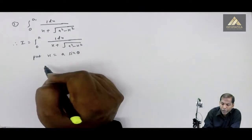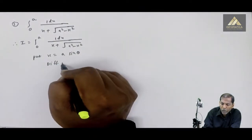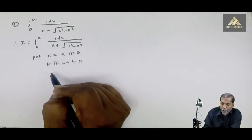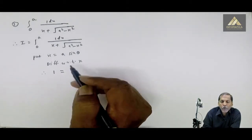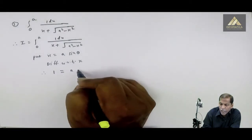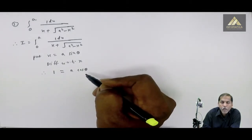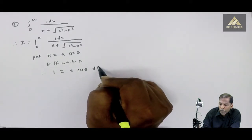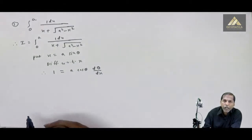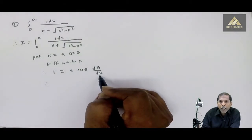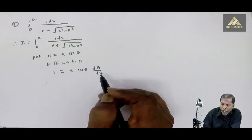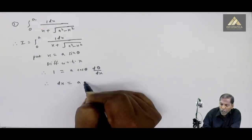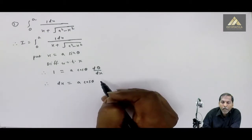After putting x equal to a sin theta, the next step is to differentiate with respect to x. Therefore, the derivative of x gives 1 equal to a times the derivative of sin theta which is cos theta, and then d theta upon dx.